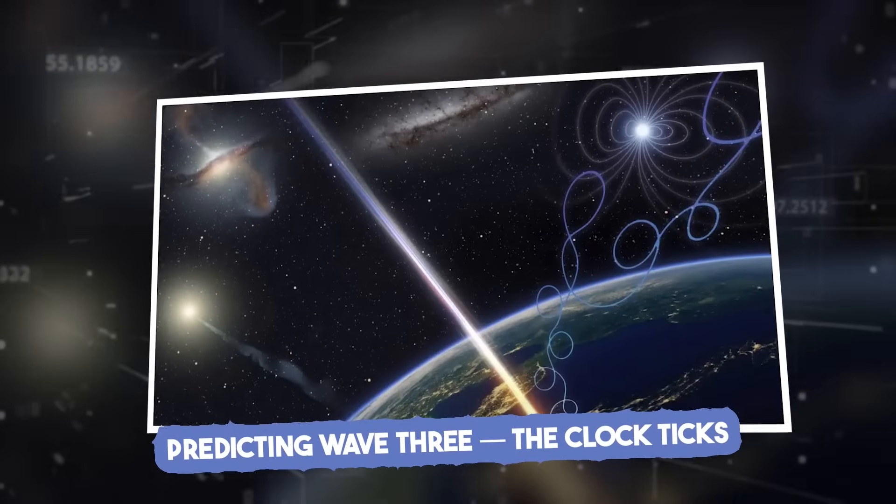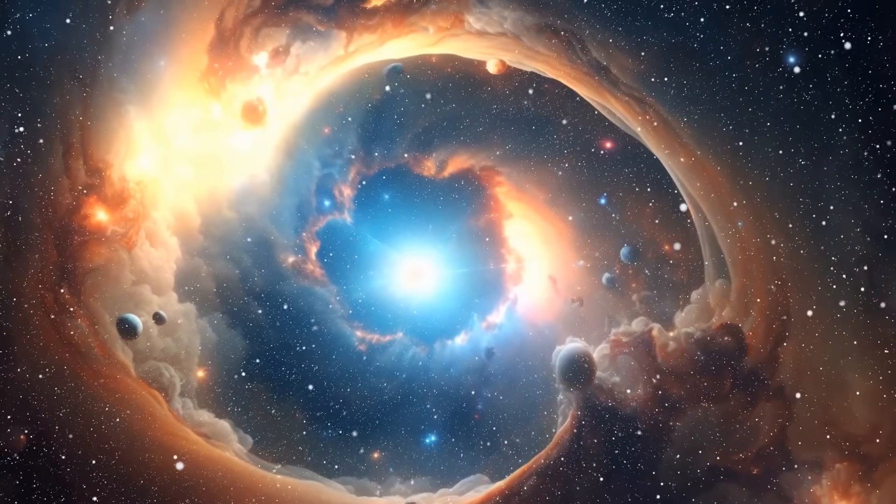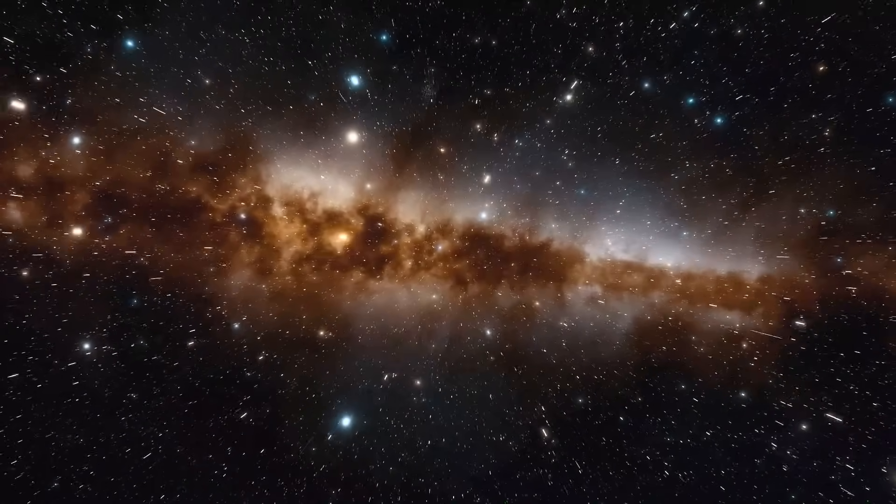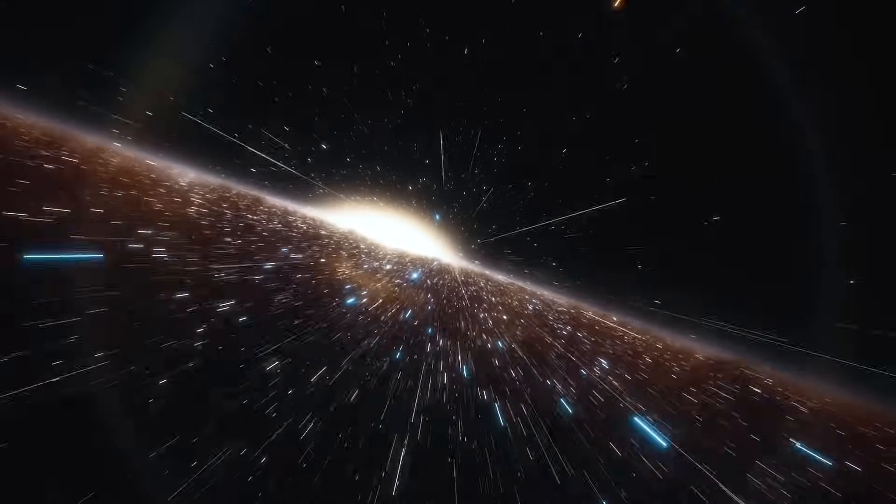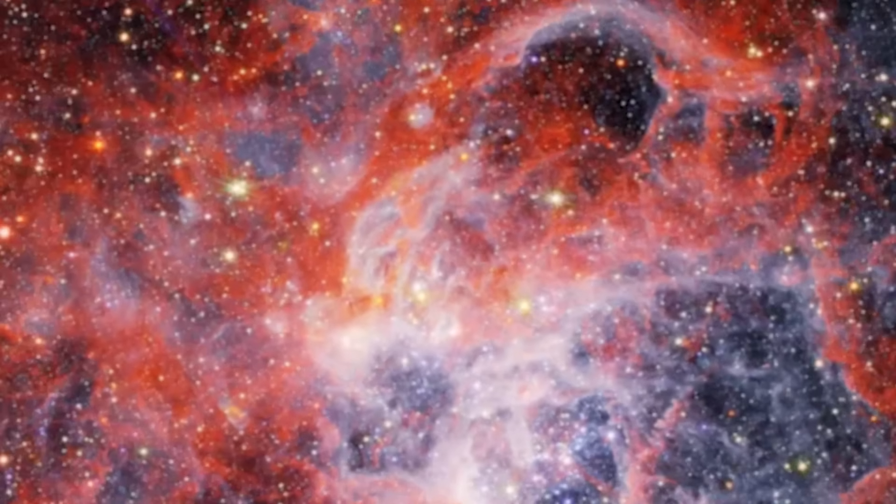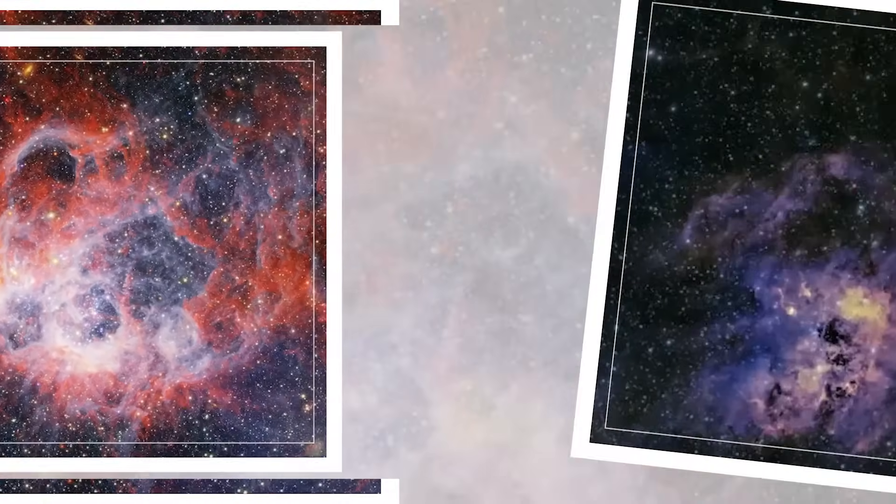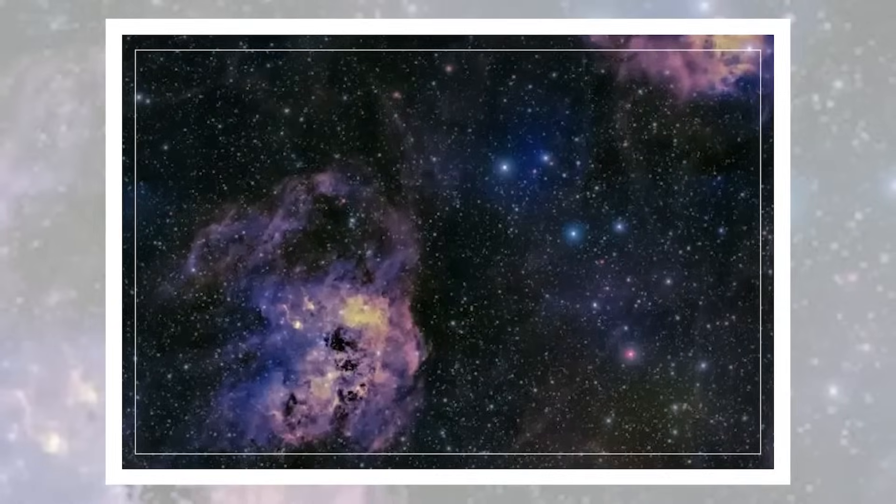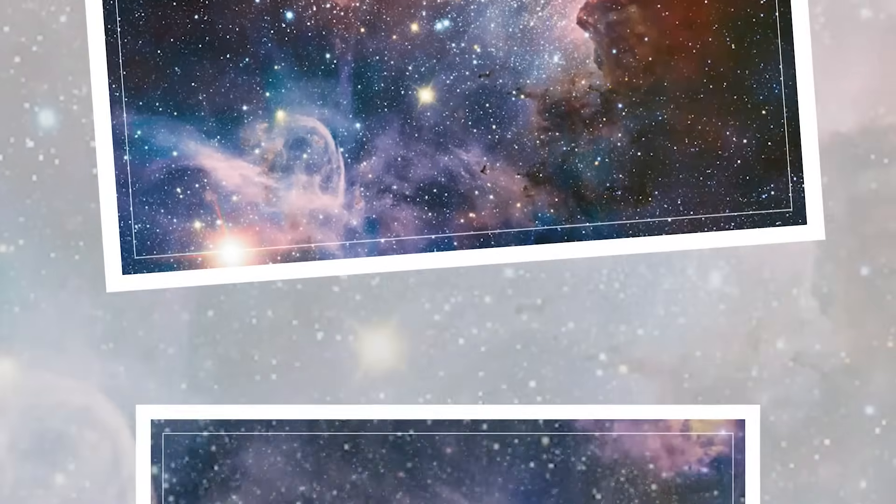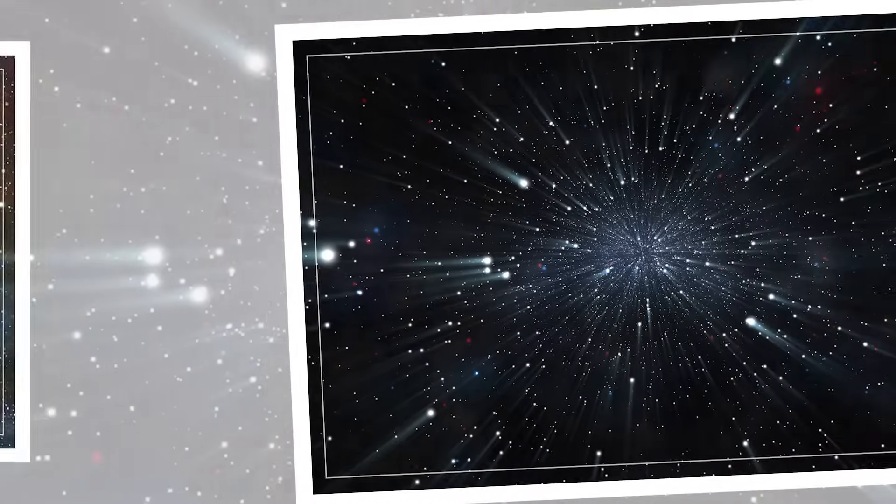Predicting Wave 3. The clock ticks. Patterns in space are rare. Repetition is rarer. But now, with two bursts separated by an 18-month interval, scientists are beginning to wonder, could this be a galactic clock? A heartbeat pulsing from Andromeda, marking time in silent, powerful bursts. The first pulse came in January 2024. The second, in October 2025. If the cycle holds, the next could arrive in April 2027. And if it does, the pattern becomes more than coincidence. It becomes a schedule.